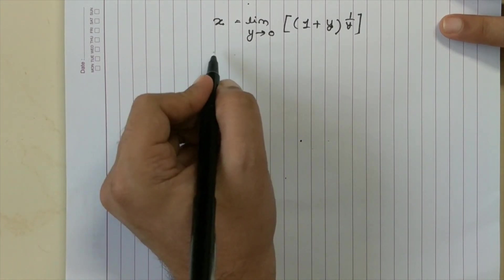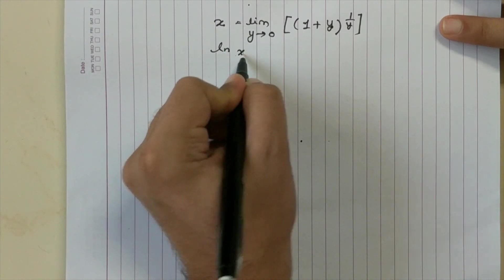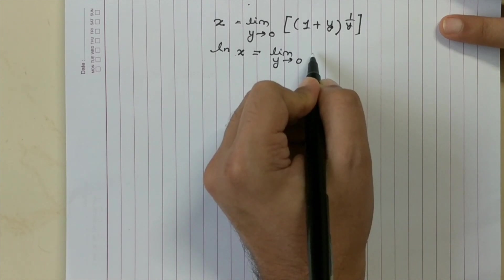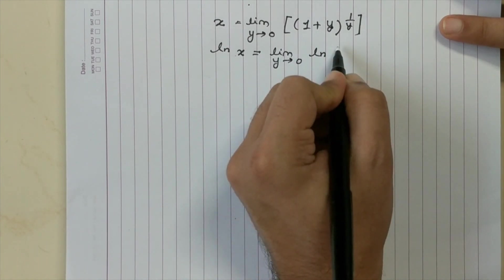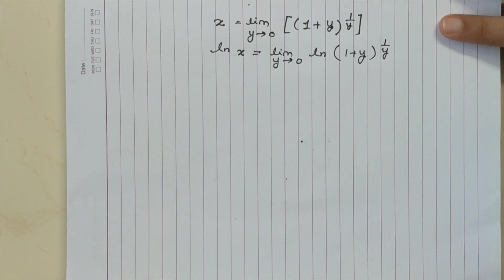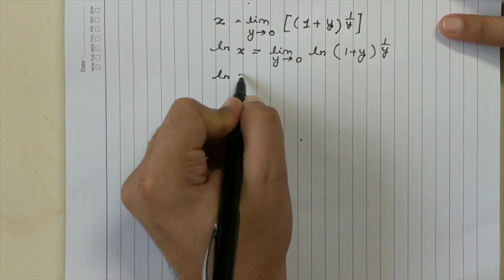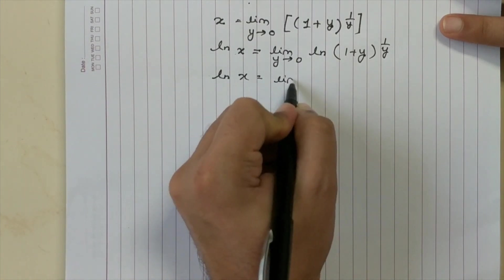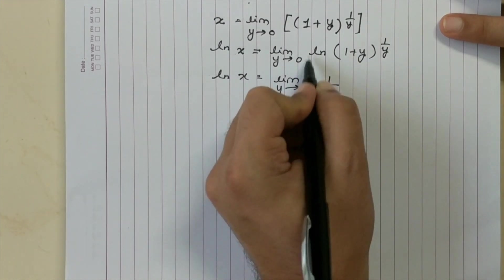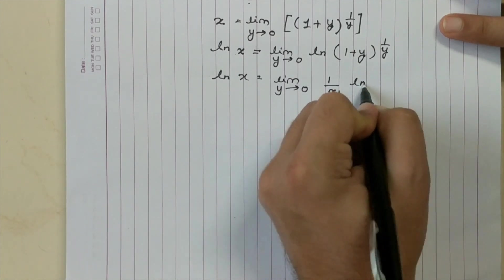I take log on both the sides, log to the base E. So I have ln of X equal to limit Y tending to 0, ln of 1 plus Y raised to 1 by Y. ln of X is 1 by X as this guy comes here or 1 by Y sorry, ln 1 plus Y.